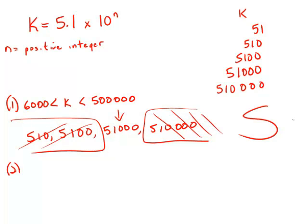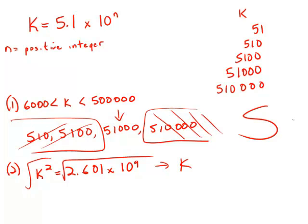Now, ignore statement number one. Focus purely on statement number two. Statement number two tells us k squared is 2.601 times 10 to the ninth. Well, once we know the value of k squared, all we'd have to do is take the square root of both sides, and we'd have k. That's the easiest thing in the world to do.